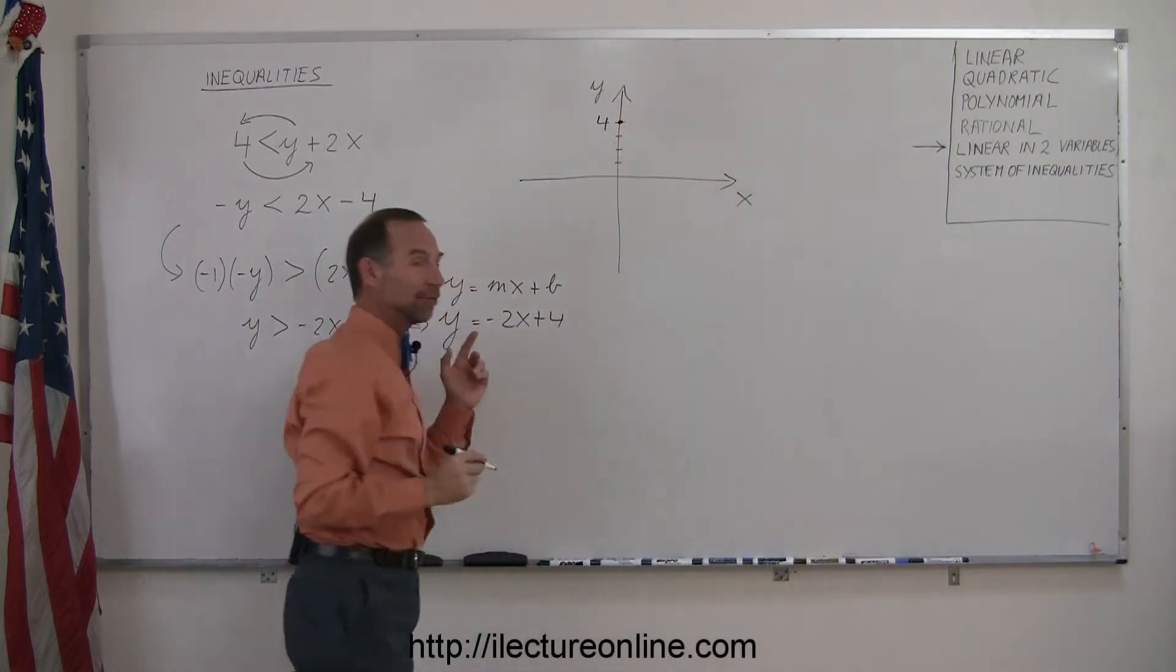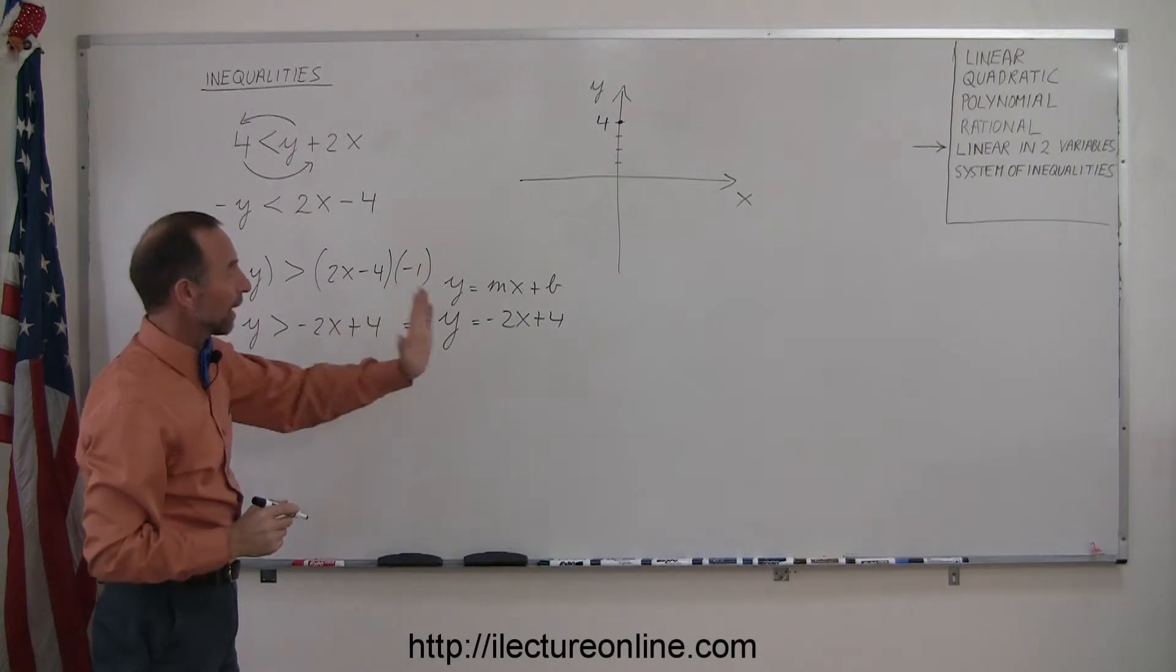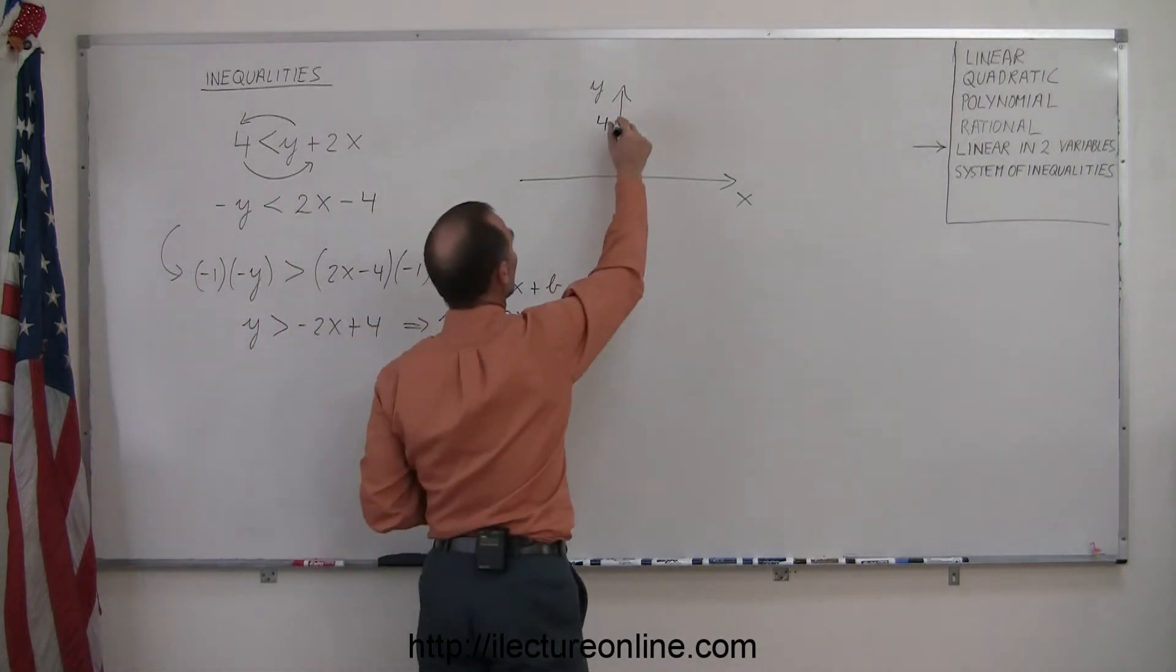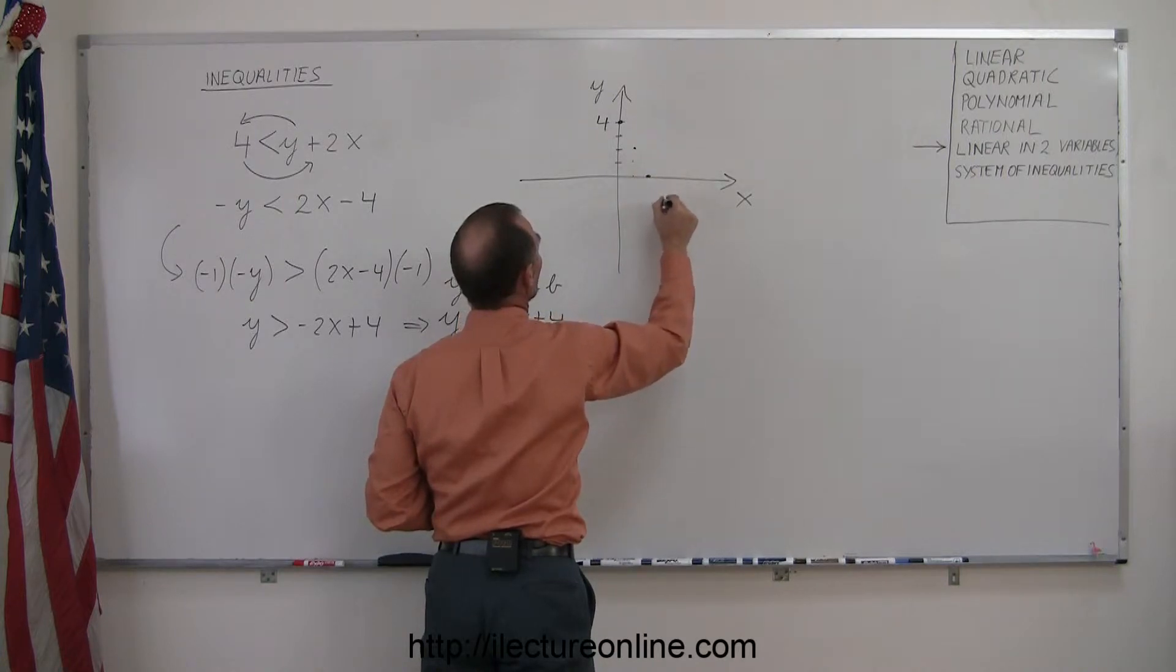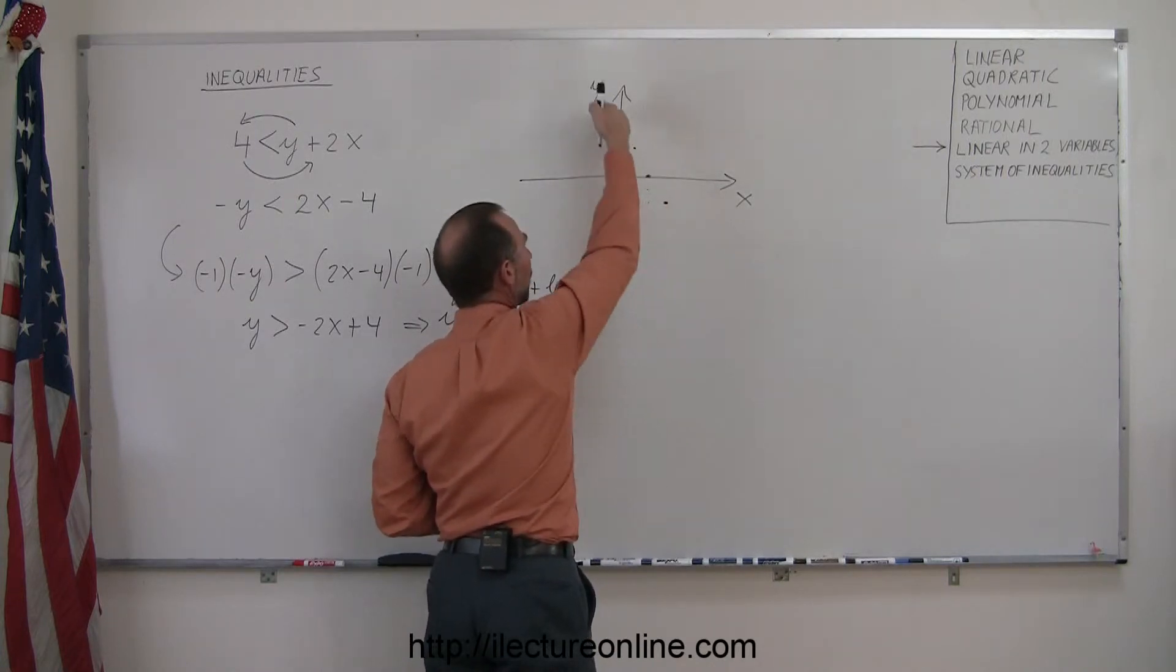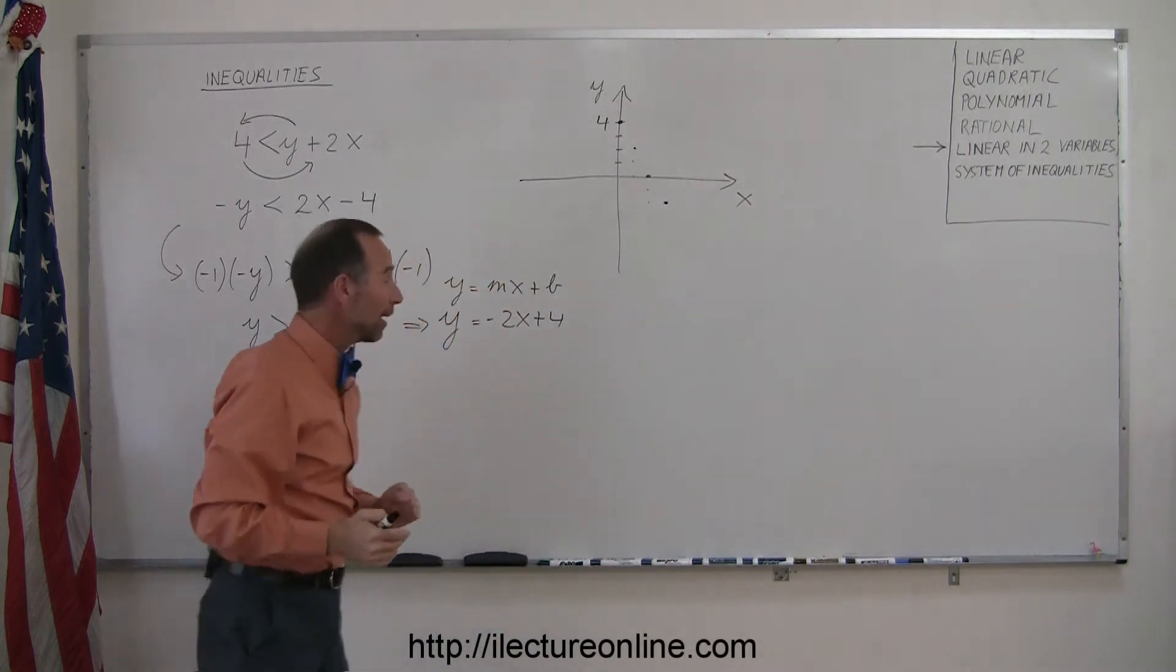And the slope is negative 2. That means you fall 2 for every run of 1. So go down 2, go over 1, go down 2, go over 1, go down 2, go over 1. Notice that all those points fall in a straight line.